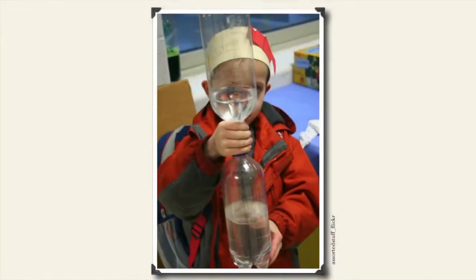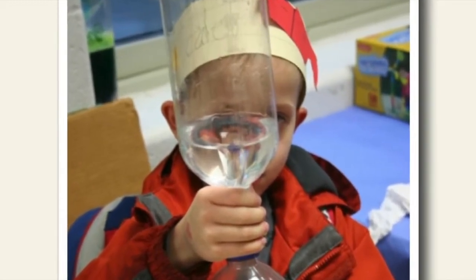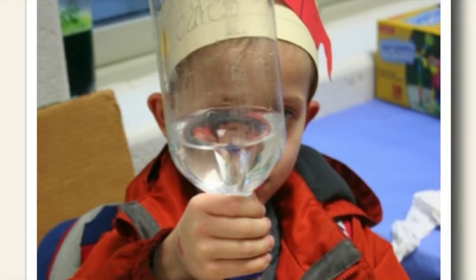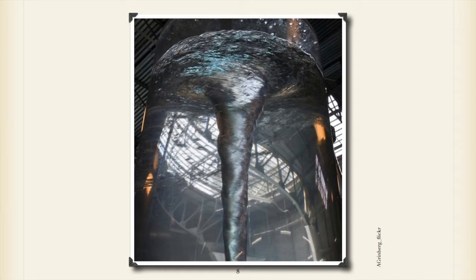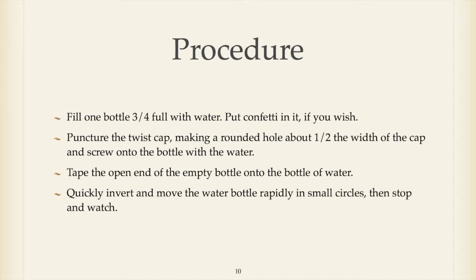Slide 7 shows a young fellow holding his tornado in a bottle with the whirlpool in the top bottle. Slide 8 is a gigantic whirlpool in a bottle — you would see this if you went to the Exploratorium in San Francisco. It's at least more than one story high. Slide 9 covers what you need, and you can do this easily at home: two 2-liter clear plastic soda bottles, a way to connect the bottles — duct tape will work — and you need to fill one bottle three-fourths full.